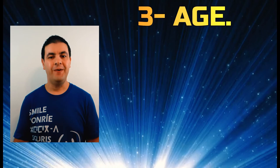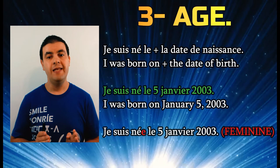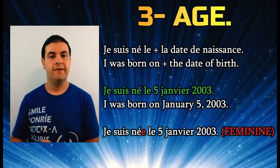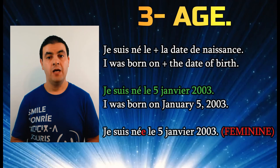You can also make this sentence longer by adding your date of birth by saying 'je suis né le' and putting your date of birth. For example: 'je suis né le 5 janvier 2003' — I was born on January 5th, 2003. Note that 'né' has an accent, and if you are masculine you use 'né,' but if you are feminine you add an 'e' to make it 'née.'